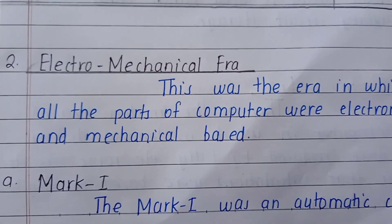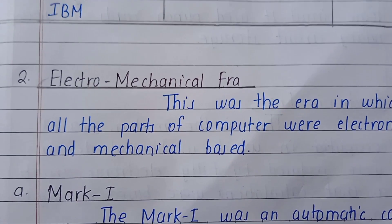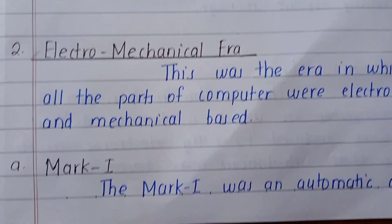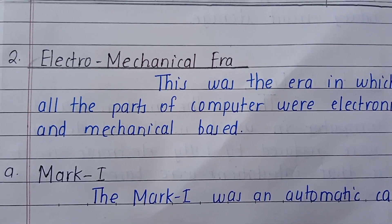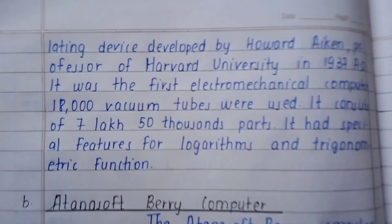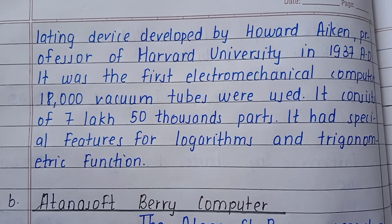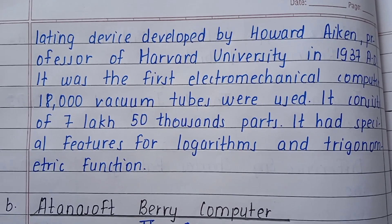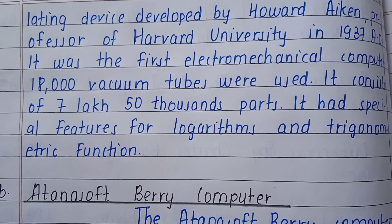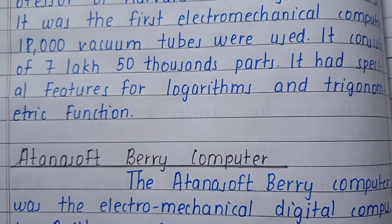Mark I and the Atanasoff-Berry Computer were the main devices of the electromechanical era. Mark I was an automatic calculating device developed by Howard Aiken, professor at Harvard University, in 1937 AD. It was the first electromechanical computer. It used 18,000 vacuum tubes, consisted of 750,000 parts, and had special features for logarithmic and trigonometric functions.